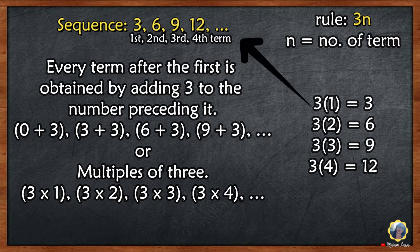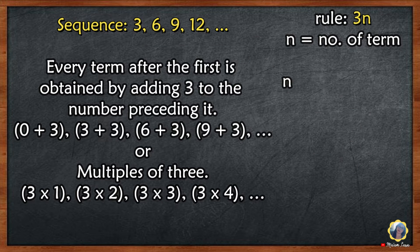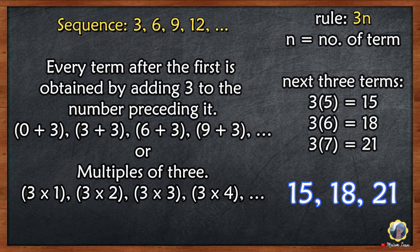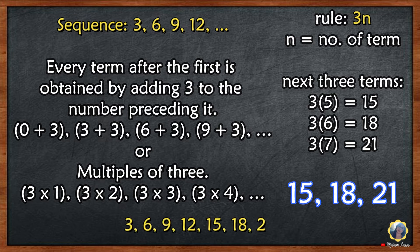Now let's get the next 3 terms. We are going to change the value of n into 5, 6, and 7. 3 times 5 is 15, 3 times 6 is 18, 3 times 7 is 21. So the next 3 terms are 15, 18, 21.